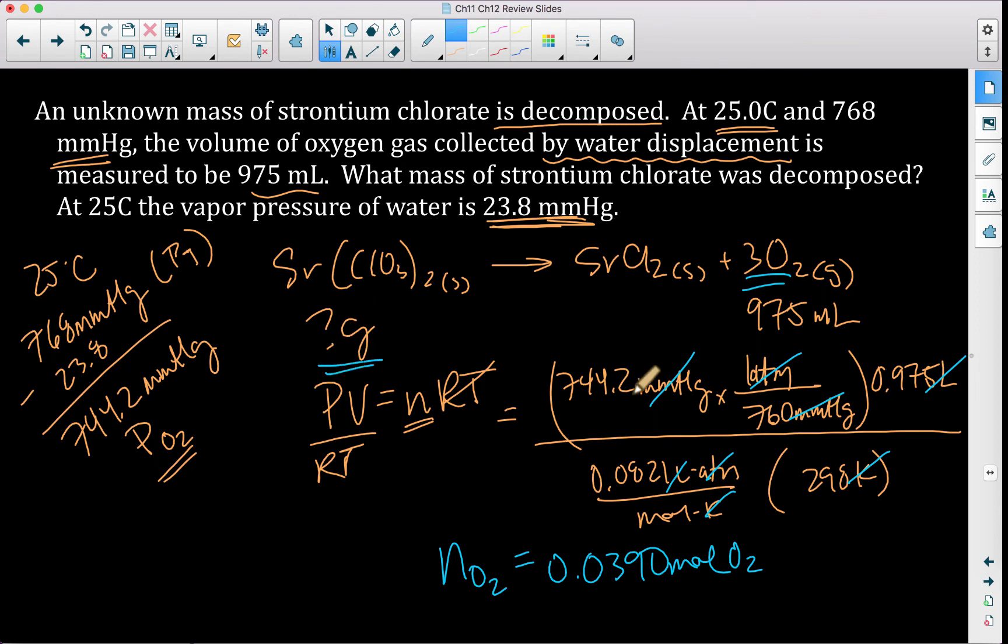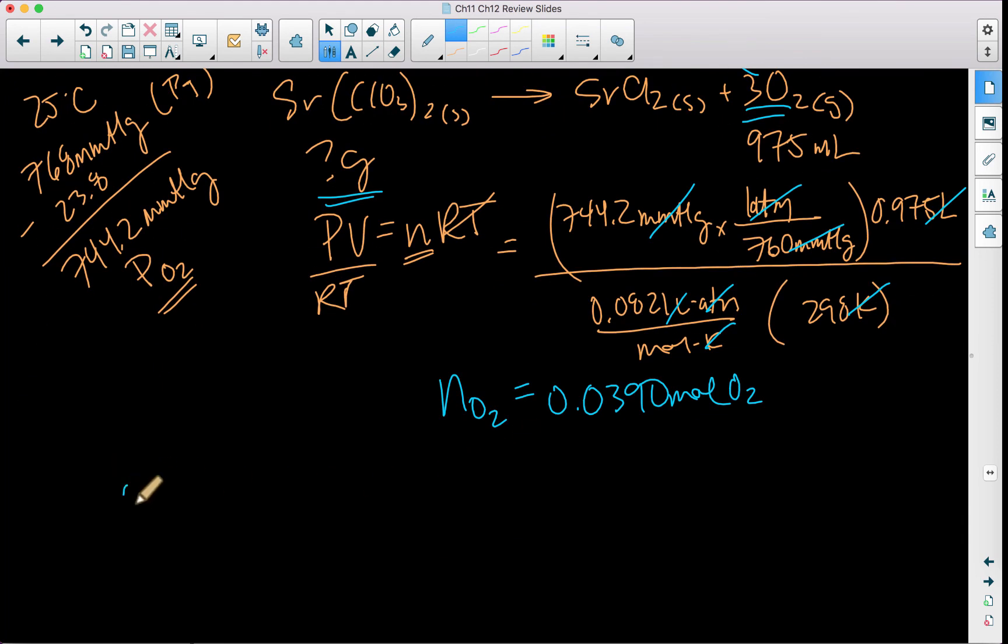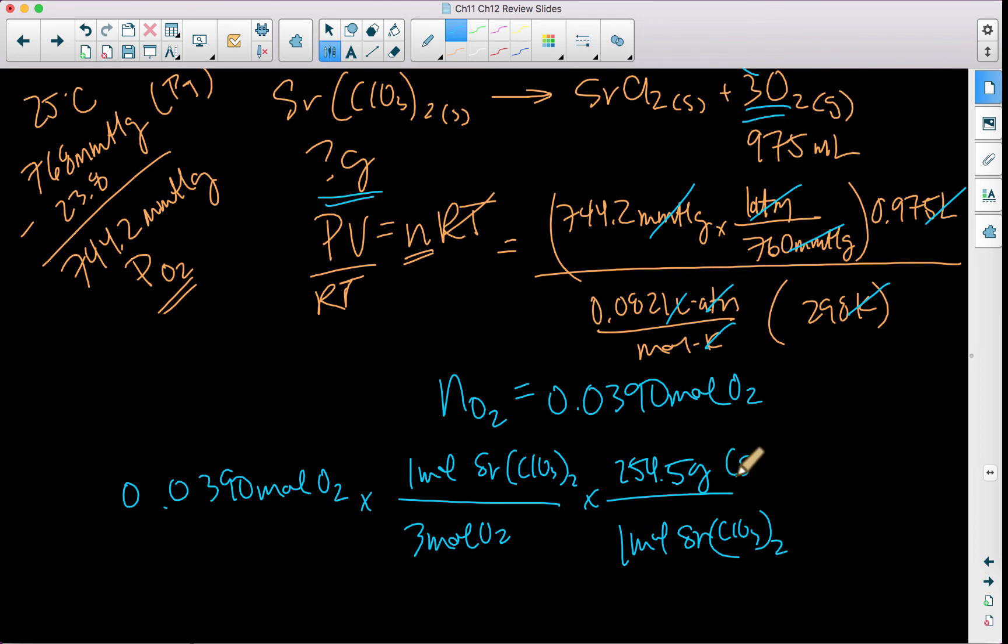And then we just got to figure out what to do now. So I have moles of this. This is my question. What do I need to do now? I need to do some stuff from Chapter 8, where I'm going to do stoichiometry. Moles of O2, and then for every 3 moles of O2, I have 1 mole of my strontium chlorate. And then what? Molar mass of strontium chlorate. For every 1 mole of strontium chlorate, if I add up all my pieces, I come up with 254.52 grams of strontium chlorate. Which gives me a final mass of 9.93 grams of strontium chlorate.